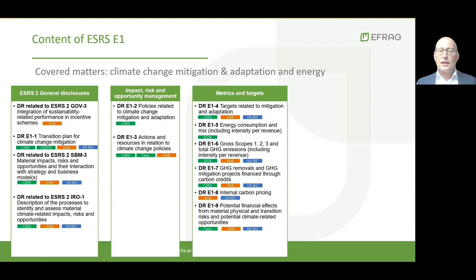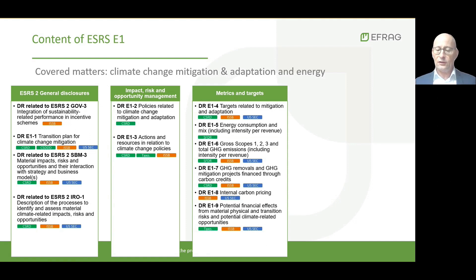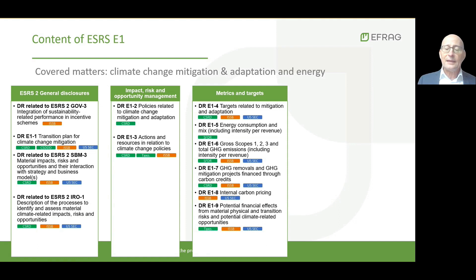Last but not least, the connectivity between financial statements and sustainability statements is a cornerstone of this standard. Climate-related financial disclosures from the financial statements are required under ESRS 2, when E1 requires the disclosure of potential financial effects from physical and transition risks and opportunities. This includes the amount and the list of current net assets at physical risk, the amount of current net assets at transition risk — what we usually call stranded assets — and the real estate assets by energy efficiency classes.